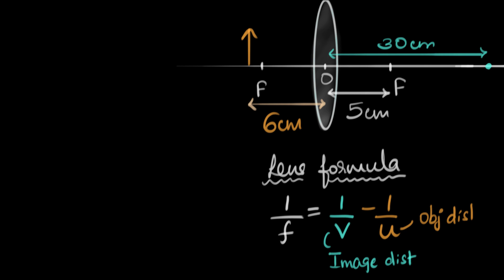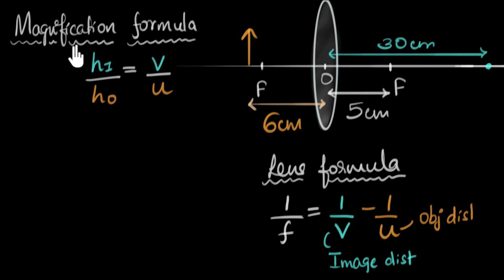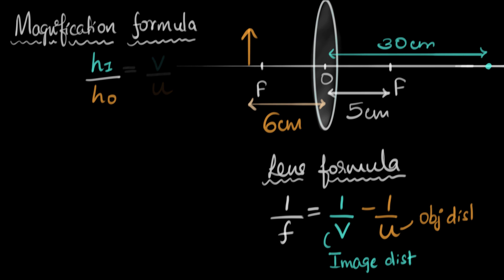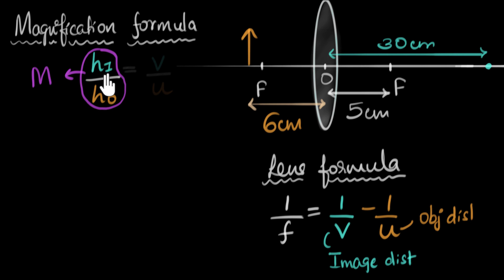This formula is called the magnification formula. On the left-hand side, we are dealing with heights: the numerator has the height of the image (hi), and the denominator has the height of the object. So the left-hand side is the ratio of the height of the image to the height of the object, and that equals the ratio of the image distance V to the object distance U. The reason it's called the magnification formula is because this ratio itself is the magnification, M, which tells us how big the image is compared to the object.